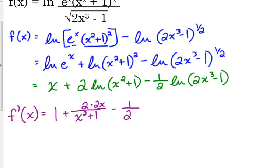Minus 1 half times 1 over what was inside the logarithm. So, I'm just going to stick that down there with the 2. Times. So, back in the numerator, the derivative of what was inside the log. So, the derivative of 2x cubed is 6x squared. And the derivative of minus 1 is 0.